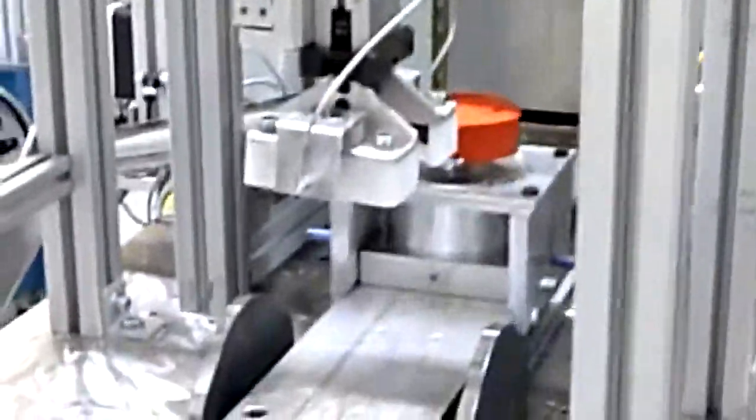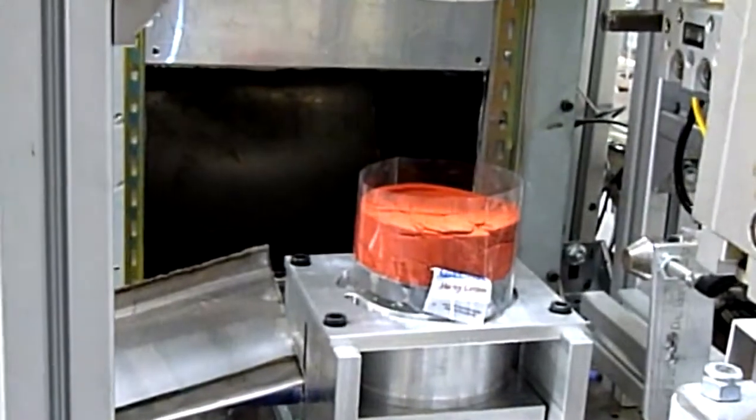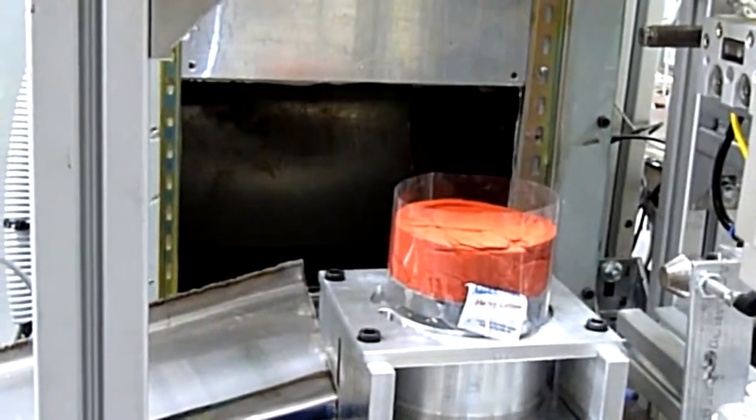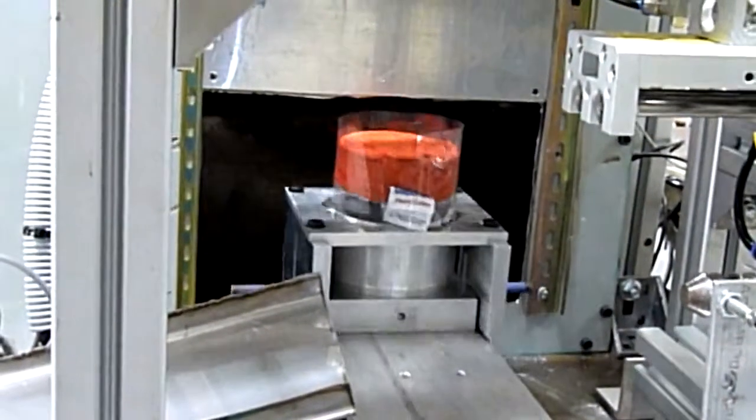The linear slide carries the t-shirt to the shrink wrapping dispenser unit located above. When the shrink wrapping has been placed around the t-shirt, the linear slide will then move the t-shirt into the oven for 10 seconds.